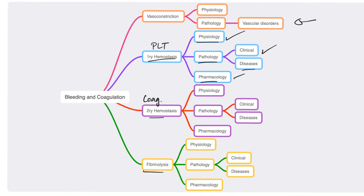After that we have secondary hemostasis — physiology is done, we have talked about it before. Pathology clinically we have the deep bleeding, we'll talk about that later. Diseases such as hemophilia, again we'll talk about that later. Pharmacology — this is heparin, warfarin, etc., also we'll talk about that later. Next is fibrinolysis. Physiology done. Pathology not done yet. Pharmacology done — I've talked about TPA, alteplase, tenecteplase, streptokinase, etc.